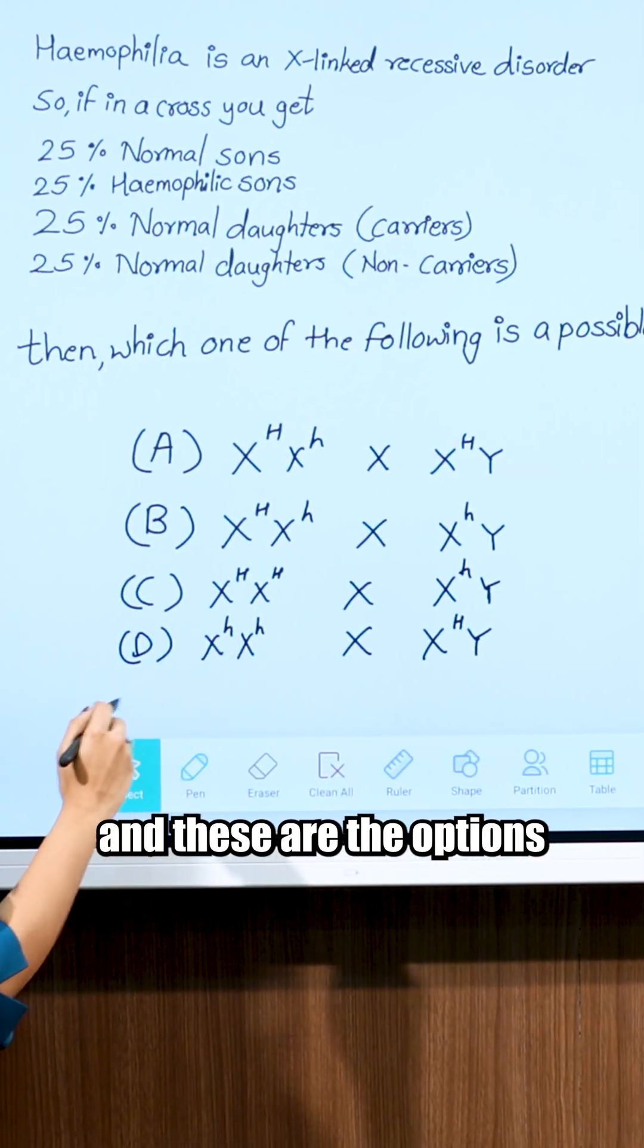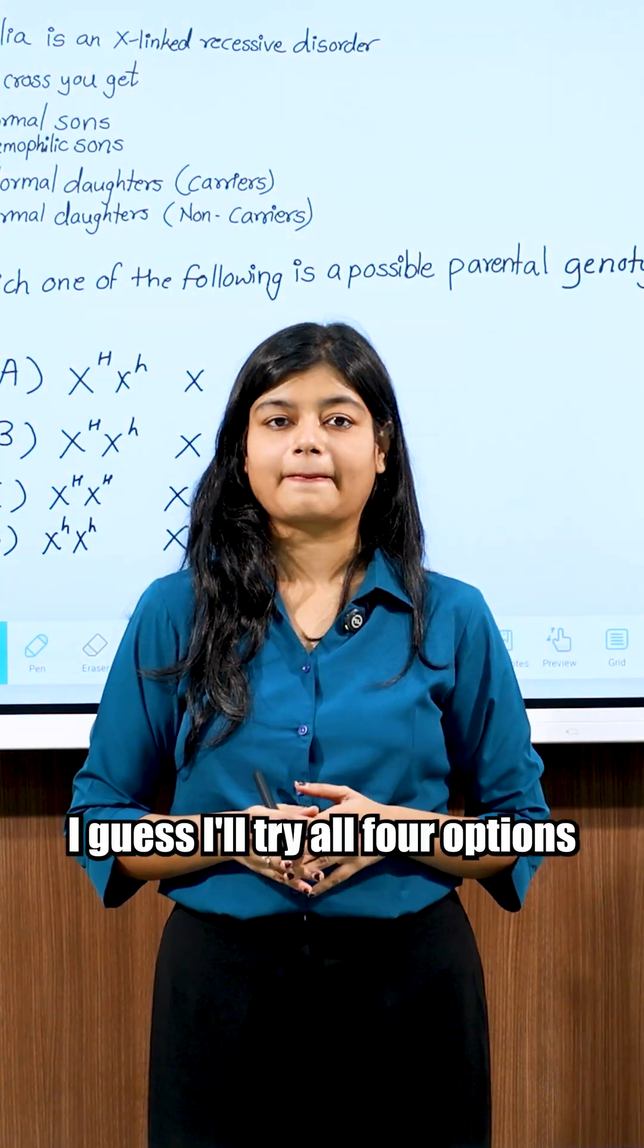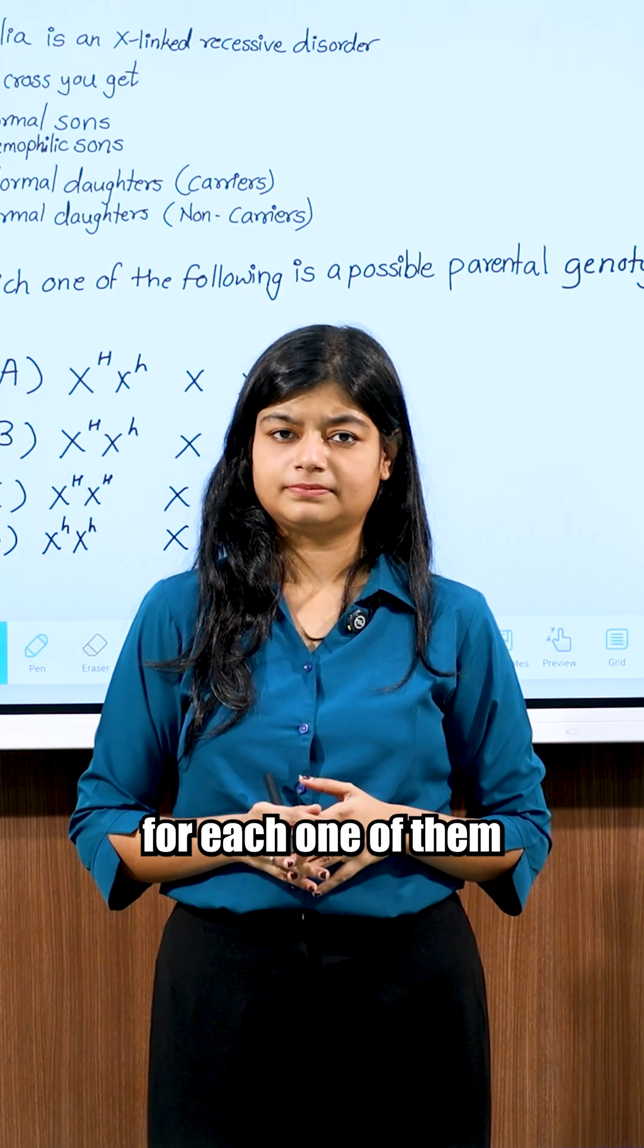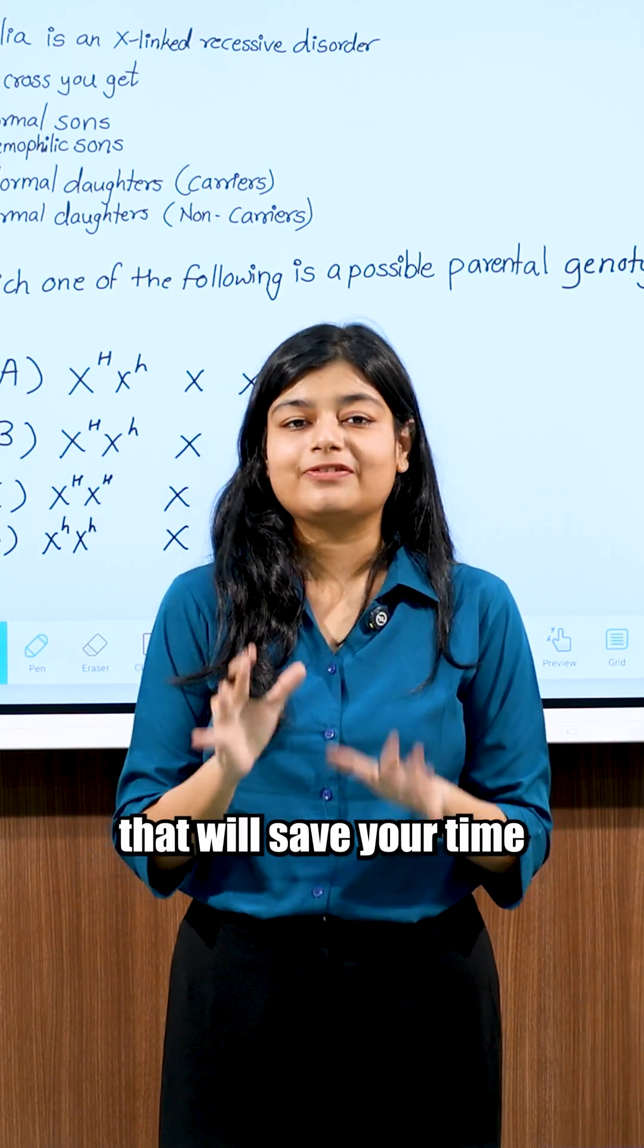These are the options. So how would you approach this in the exam? I guess I'll try all four options, draw a Punnett square for each one and see which one fits. Hold on, let me show you a quick trick that will save you time.